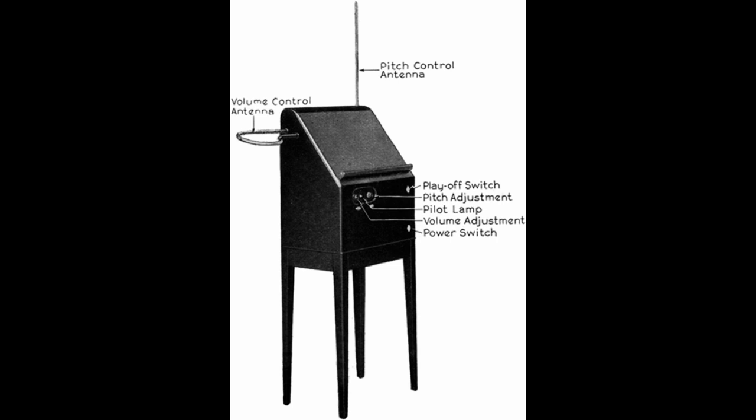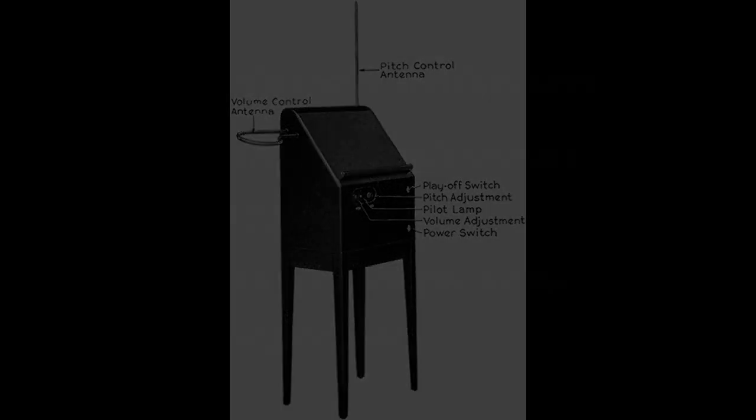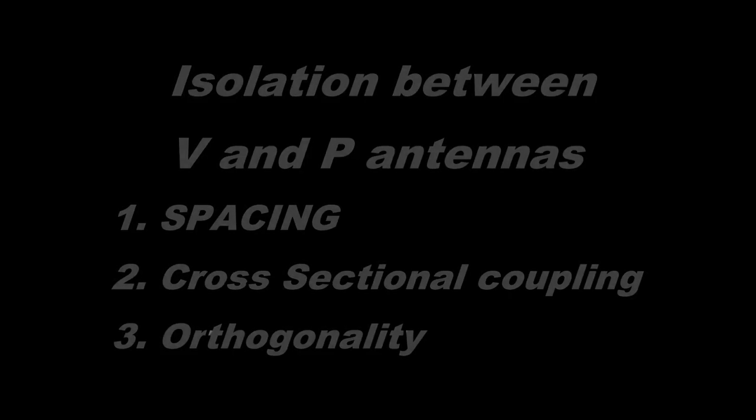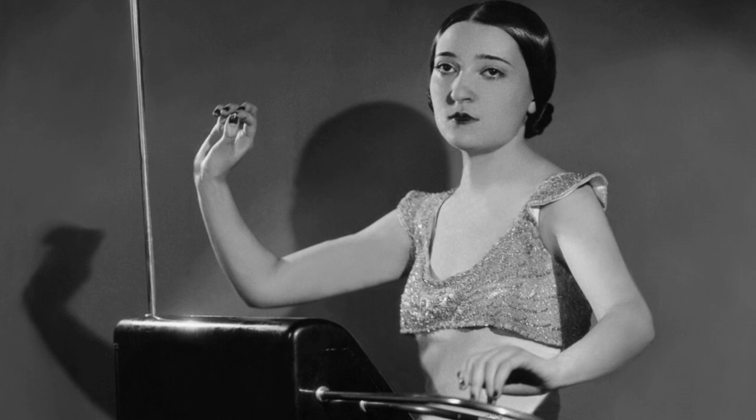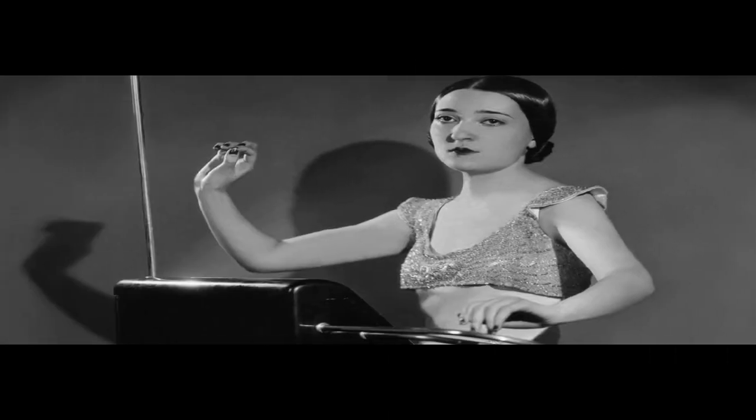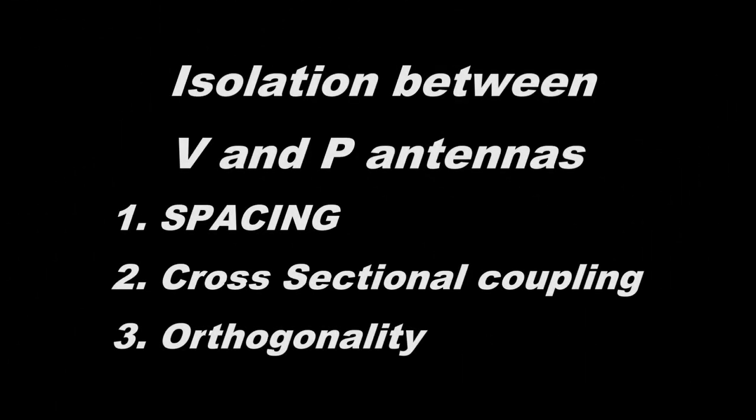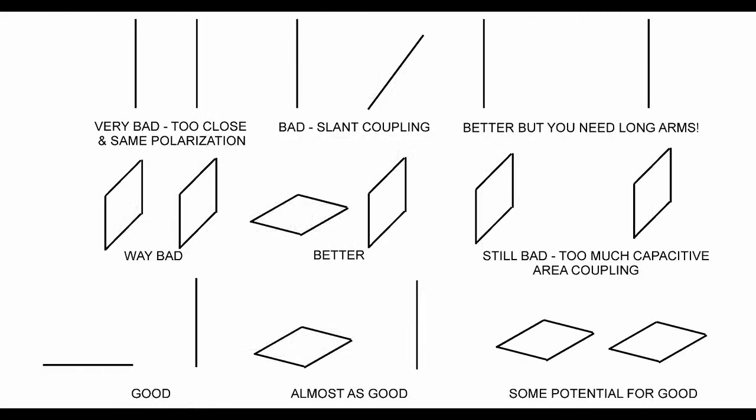To reduce coupling there are three major methods. One is simply spacing - get the antennas spaced as far apart as possible. The other way to reduce coupling is to reduce the cross-sectional area.